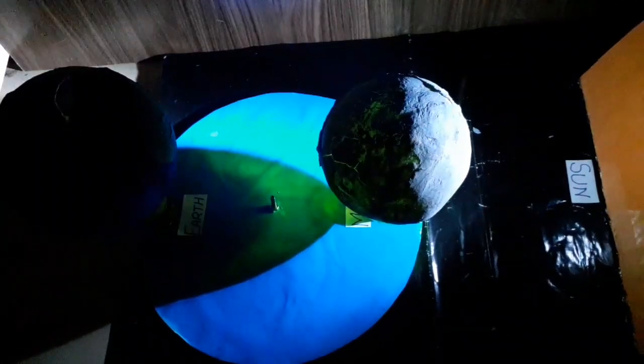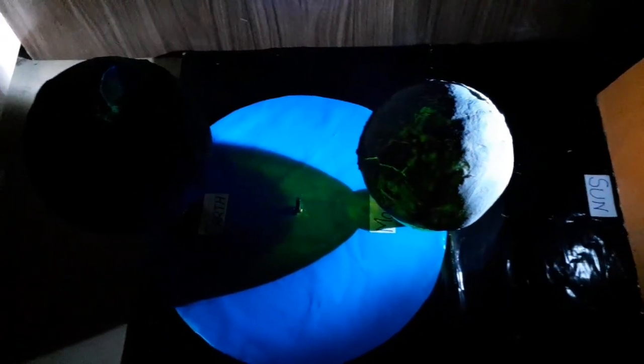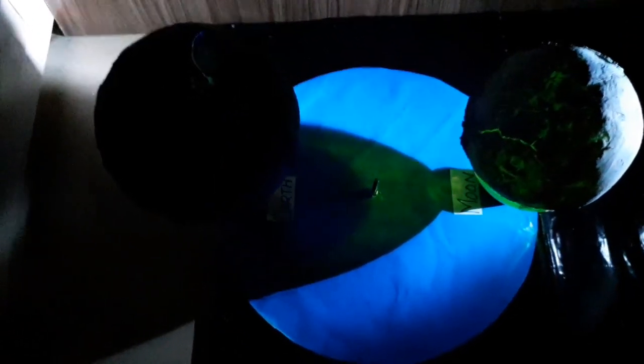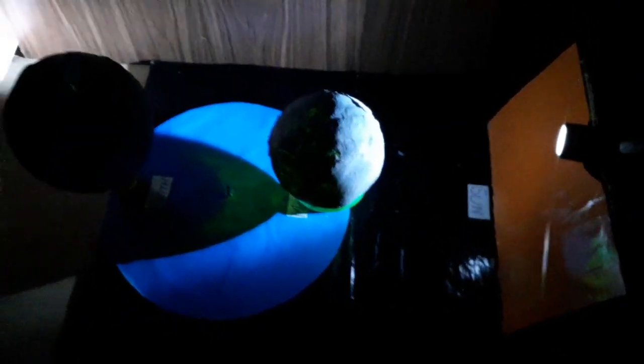It breaks the path of sunlight and in other words we can say that moon's shadow falls on earth. That is why we can't see sun. So this is solar eclipse.